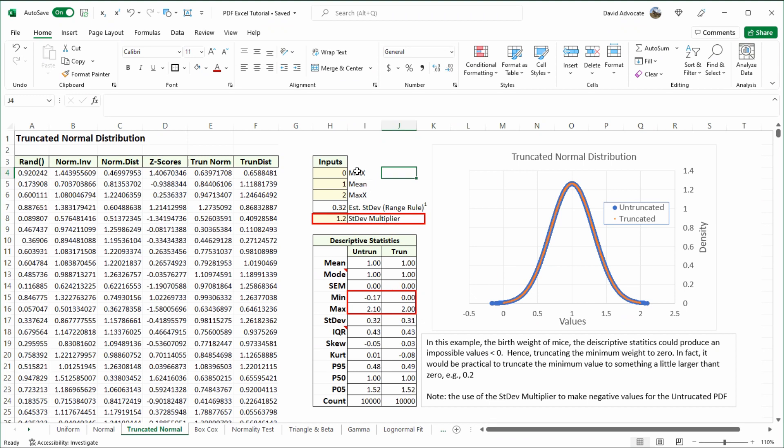They had a minimum weight of zero, a maximum weight of two grams, and an average of one gram. So I've input this into our normal distribution here in our data table.